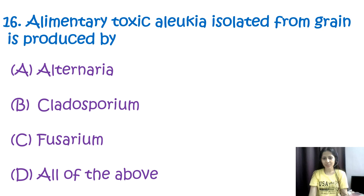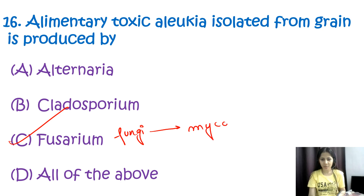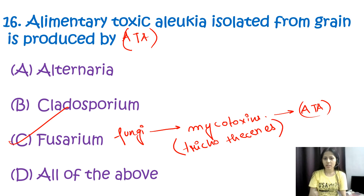Question number sixteen: alimentary toxic aleukia is isolated from grains produced by — options are Alternaria, Cladosporium, Fusarium, or all of the above. The correct option is C, Fusarium species. Fusarium is a species of fungi that produces mycotoxins associated with ATA (alimentary toxic aleukia). These mycotoxins, such as trichothecenes, contaminate grains and can cause severe illness in humans when ingested.